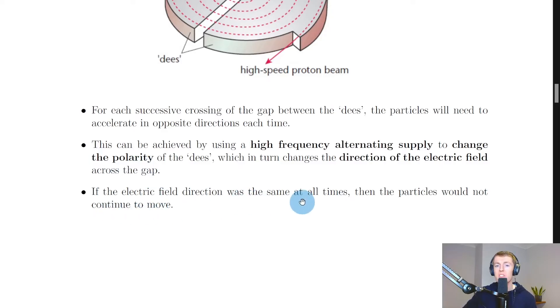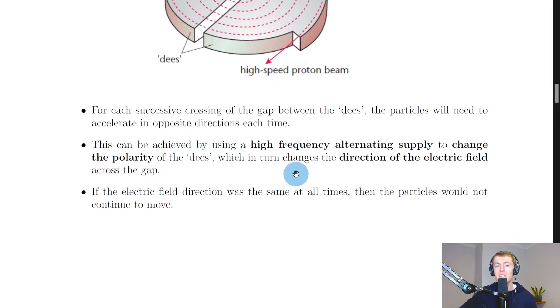If the electric field direction was the same at all times, then the particles would not continue to move. This is very similar to why we need a high frequency alternating supply for linear accelerators as well. Instead of changing the polarity of the hollow tubes, in this case we're talking about the dees, changing the polarity of the dees which in turn changes the direction of the electric field.